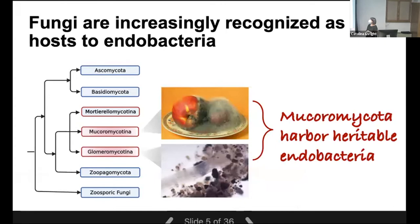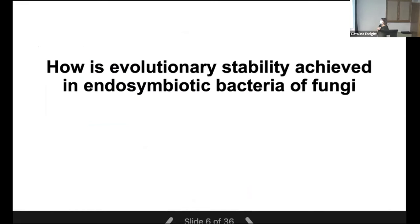Now let's go to bacterial endosymbionts of fungi. Fungi are increasingly, particularly in the last decade, recognized as hosts to endobacteria. We are particularly interested in early divergent fungi in the phylum Mucoromycota, specifically two subphyla: Mucoromycotina and Glomeromycotina. The question we have been asking is how these endosymbiotic bacteria in fungi achieve evolutionary stability, or how these associations can be stably maintained, if the paradigm drawn from a different system suggests they should go extinct.